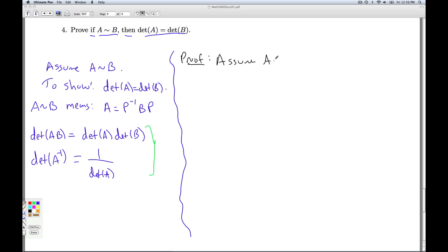Assume A is similar to B. There exists a matrix P so that A equals P inverse B P. That means, since the determinant is a well-defined function, I can take the determinant of both sides.